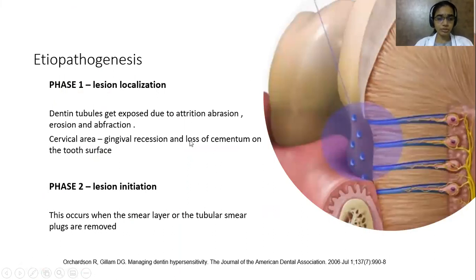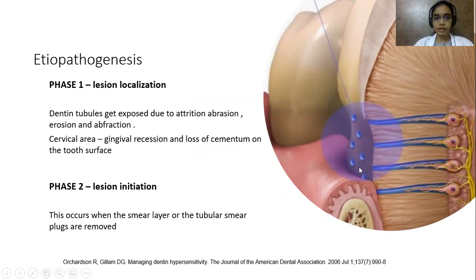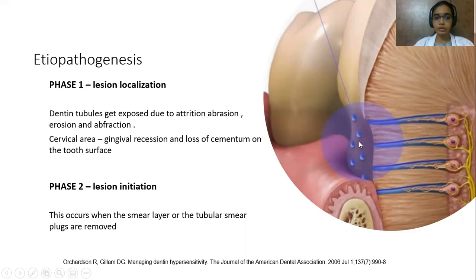Coming to the etiopathogenesis of Dentin Hypersensitivity, it takes place in two phases: phase 1 is lesion localization and phase 2 is lesion initiation. In lesion localization, the dentinal tubules get exposed due to attrition, abrasion, erosion and abfraction. In the cervical area, gingival recession and loss of cementum are common reasons why dentin gets exposed to the oral cavity.